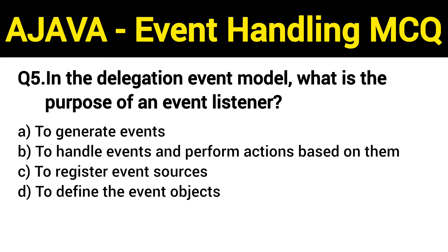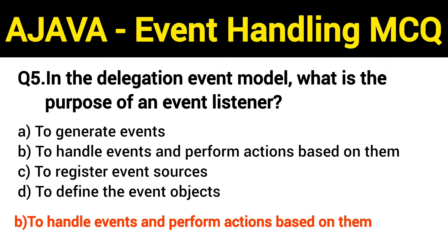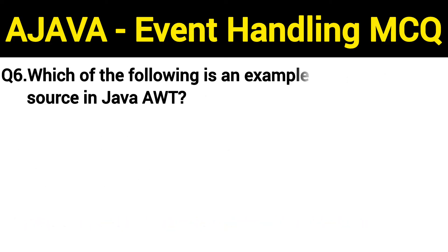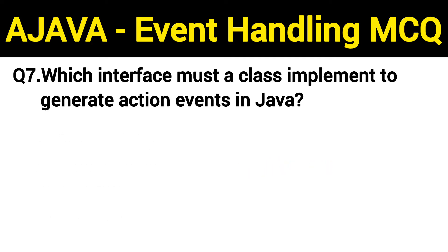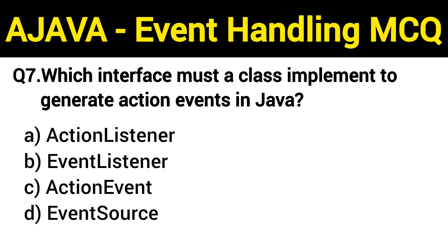Question number 5: in the delegation event model, what is the purpose of an event listener? The right answer is option B: to handle events and perform actions based on them. Question number 6: which of the following is an example of an event source in Java AWT? The right answer is option C: JButton.